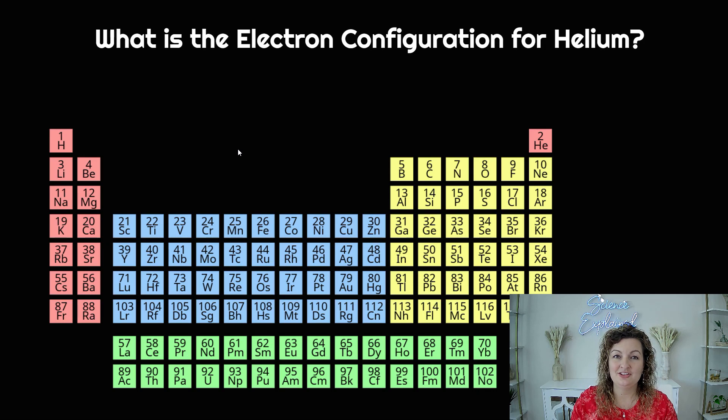What's the electron configuration for helium? Well, first you have to find helium. Helium is He on the periodic table, it is right here. This is actually in the S block even though it's over here with the P block. Helium is part of the S block. Notice that it's the same pink color as the S block.